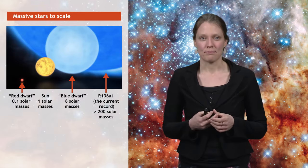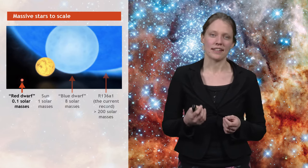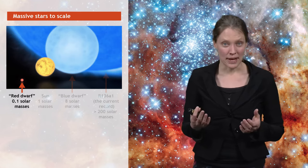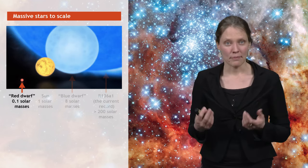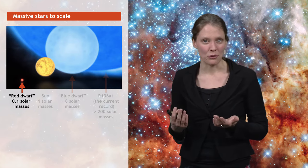So let's compare them to the Sun. The most common stars in the universe are low-mass. They're similar to the Sun, or even less massive, and they're much cooler. And because they're cooler, they appear red. And so we call them red or even brown dwarfs.